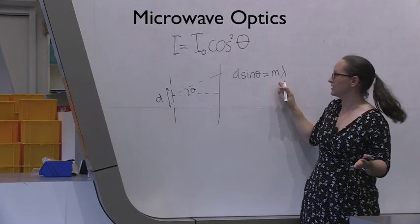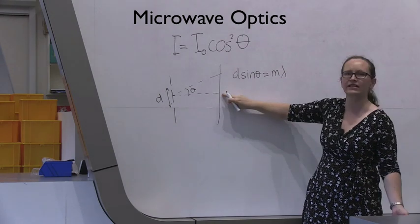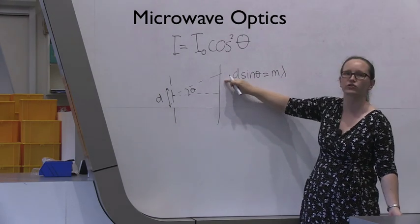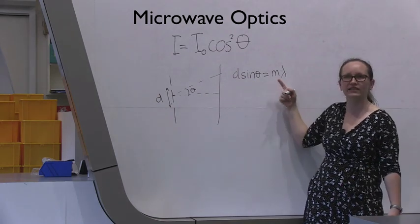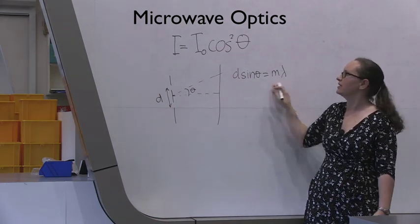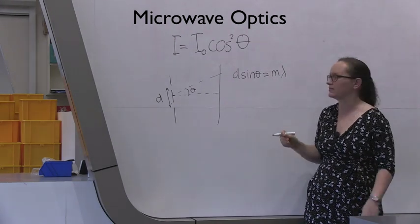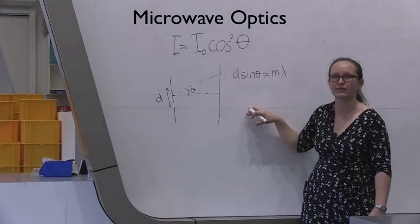where m is the order. So here we've got the zeroth order, then we have the first order, second order, third order, etc. So m is an integer in this case. This is the equation for where you'll find the maximums from this double slit experiment.